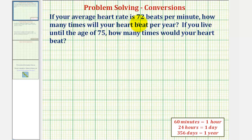Let's begin by writing the rate of 72 beats per minute in fraction form, where we'd have 72 beats per one minute.